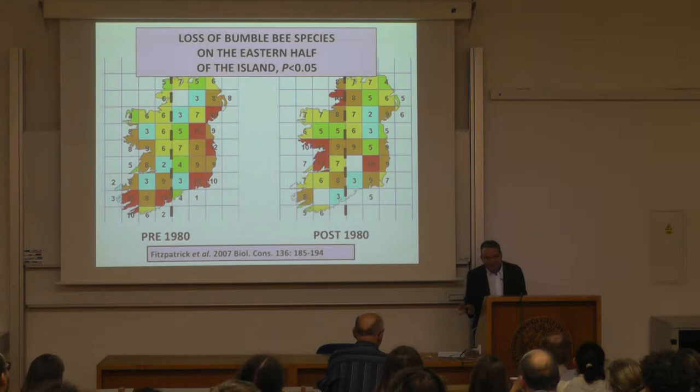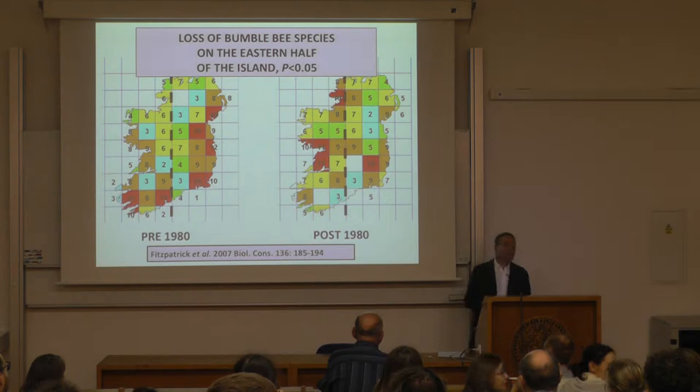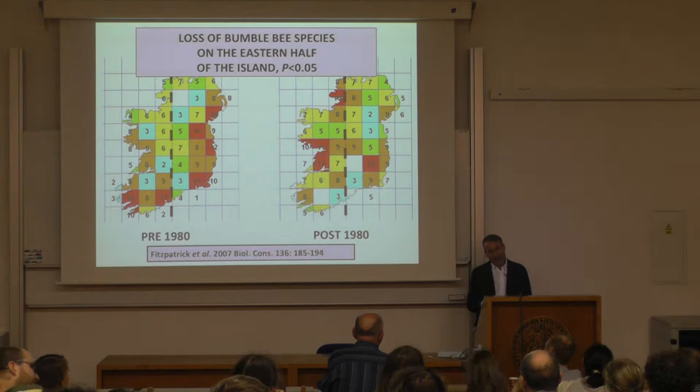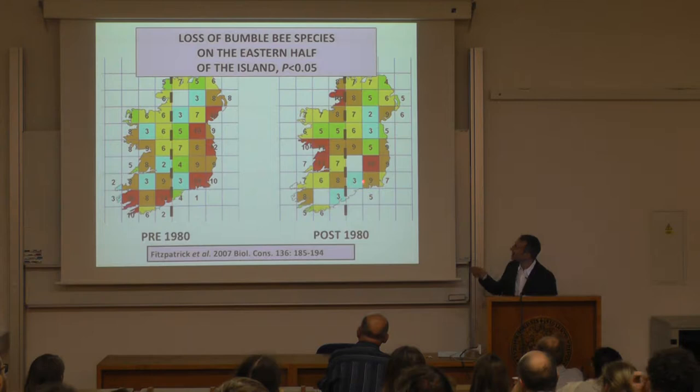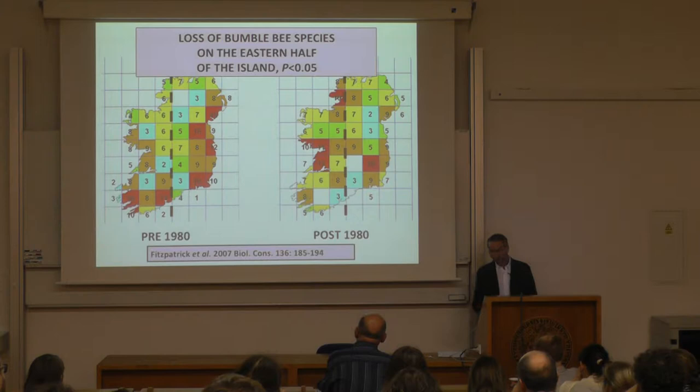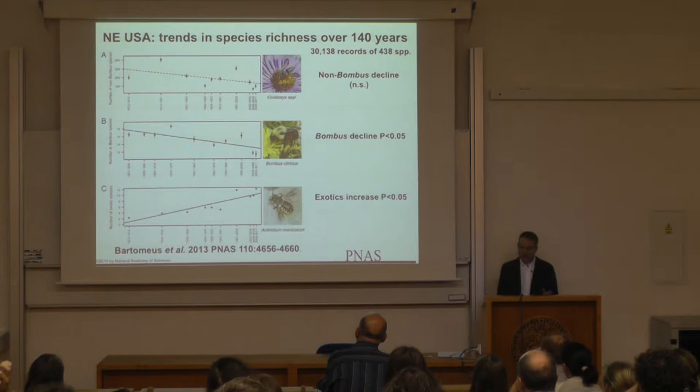The east coast of Ireland is quite intensively managed, with agriculture similar to around Prague or in Germany or the Netherlands. The west coast is still very wild and underdeveloped. The driver of the decrease on the east coast is probably intensive agriculture — and that's probably the case for most wild bee species.